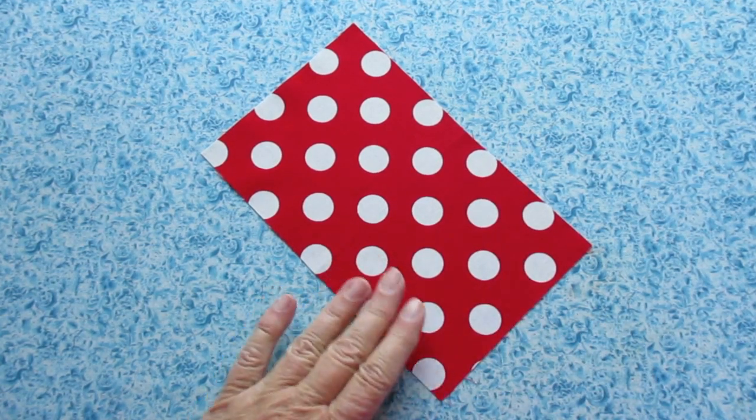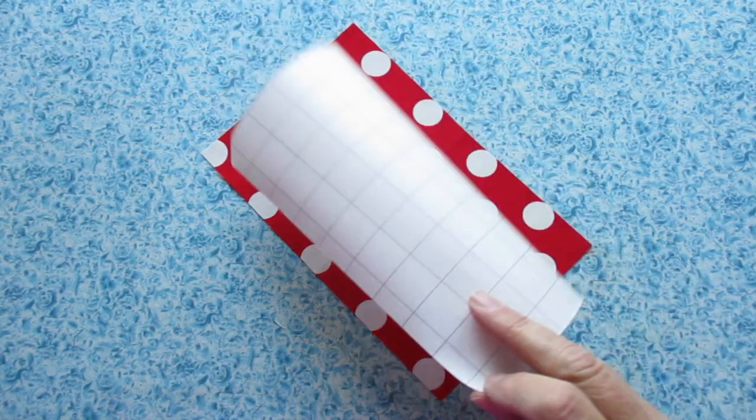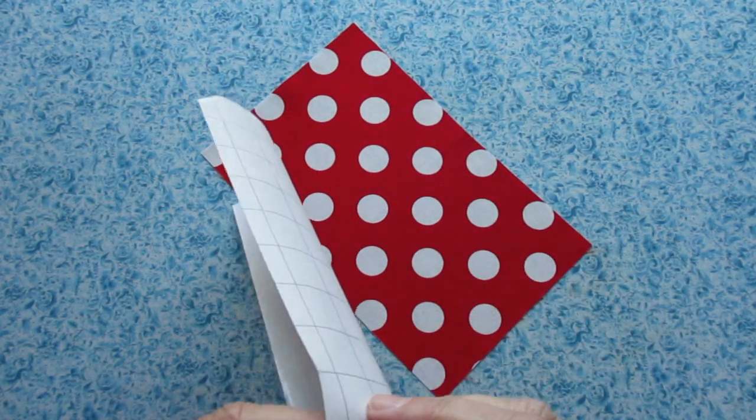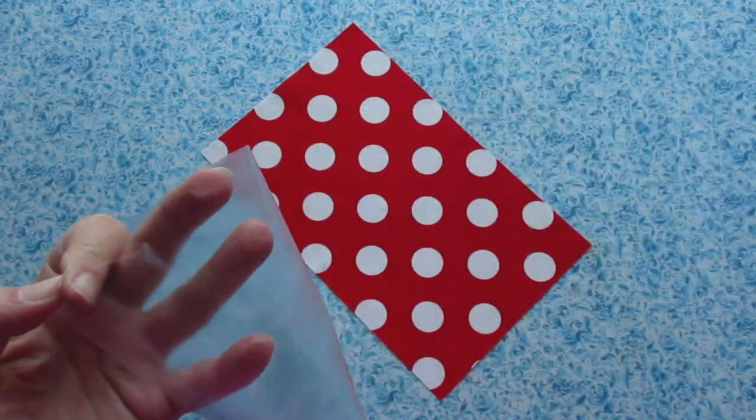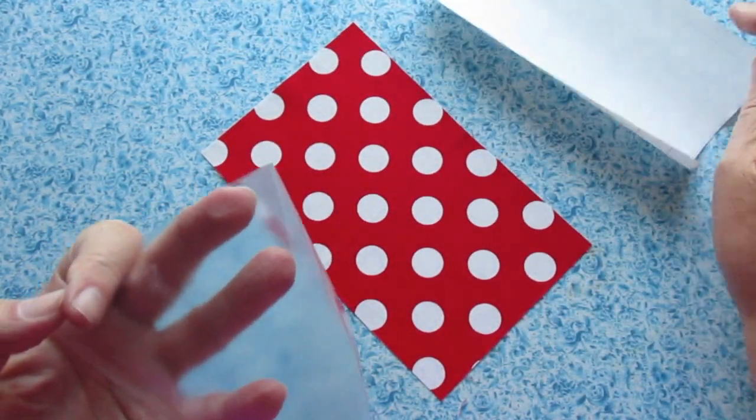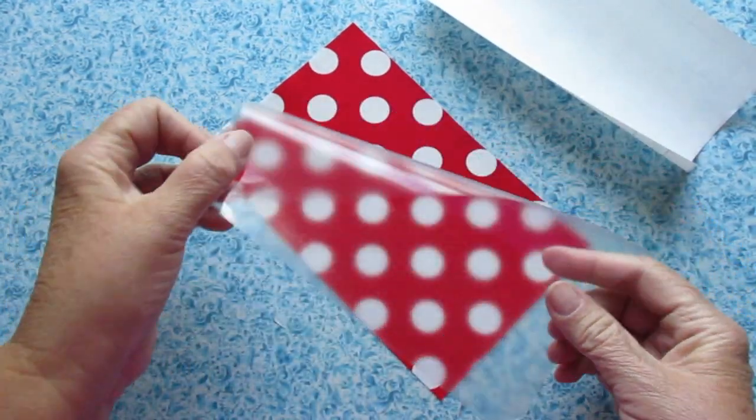Now grab your iron-on vinyl. I have a link on DebsDays where you can get it. Peel the paper backing off the piece of vinyl. Don't throw away that paper, we're going to need it. And center the sticky side in the middle of your fabric.